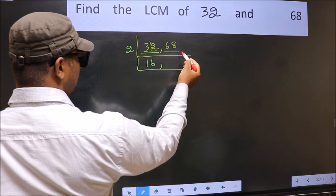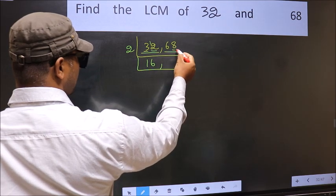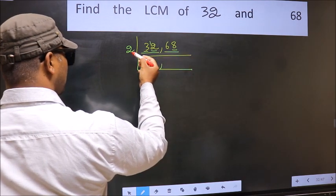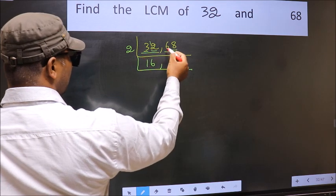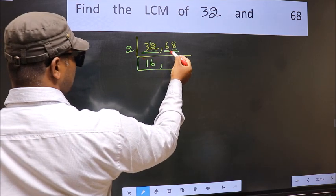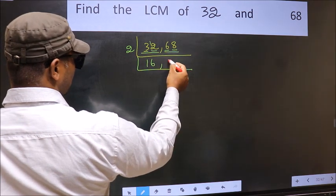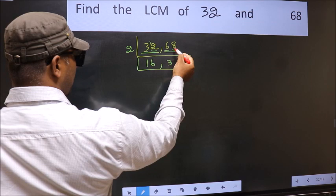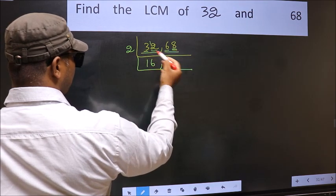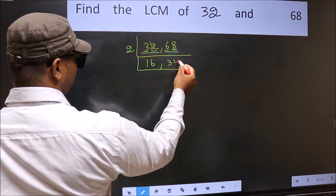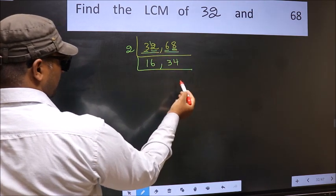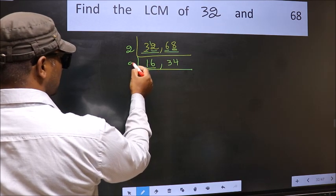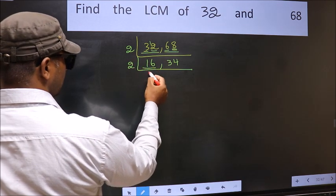The other number is 68. Last digit is 8, which is even, so it is divisible by 2. The first digit is 6; when do we get 6 in the 2 table? 2, 3, 6. The other digit is 8; when do we get 8 in the 2 table? 2, 4, 8. So now here we have 16, which is 2, 8, 16.